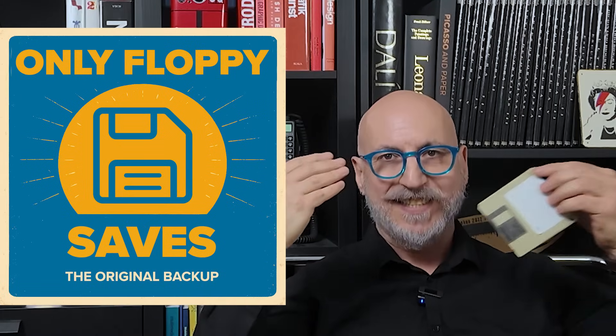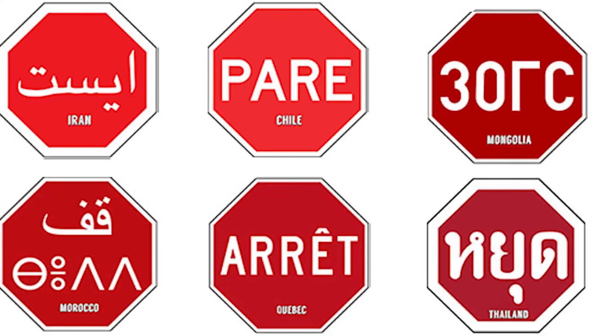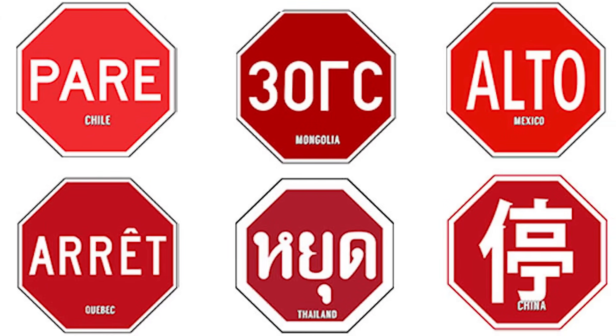Some icons outlive the hardware because they move from being signifiers tied to real objects into being symbols tied to collective memory. The floppy disk crossed that line — it represents an action, an idea: save. So why do we keep trusting icons that don't match reality anymore? The answer isn't technical, it's emotional. Symbols endure when they feel safe. Think about the stop sign: even without the word 'stop,' the red octagon says it all — the shape itself became the meaning. From a semiotic perspective, the floppy disk shifted from icon, a likeness of the object itself, to symbol, a convention agreed upon by culture. Maybe it's also saving a generation's memory of computing.